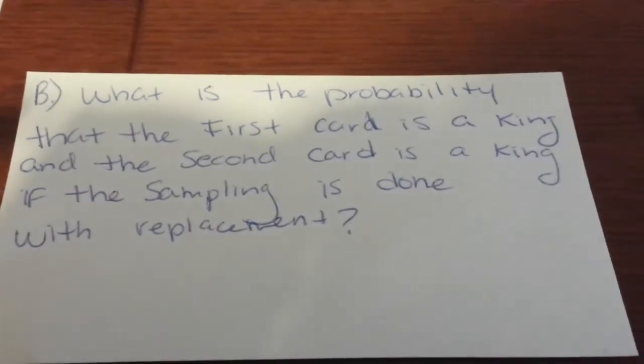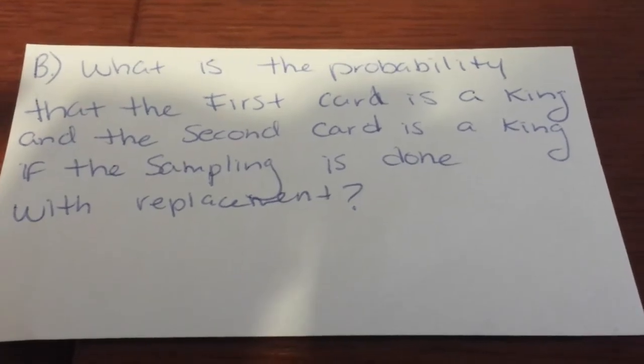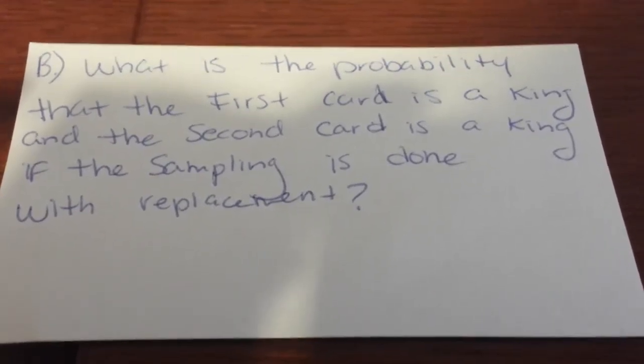Number B. What is the probability that the first card is a king and the second card is a king if the sampling is done with replacement?